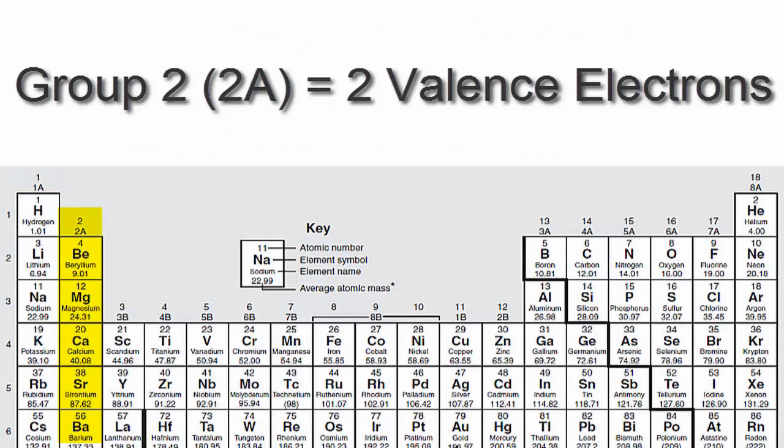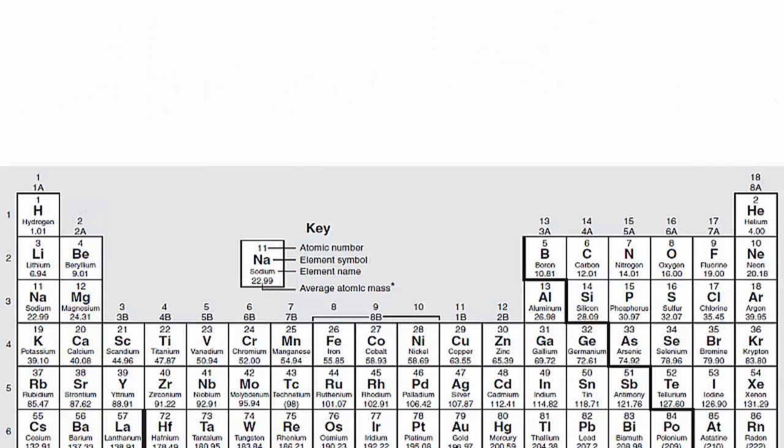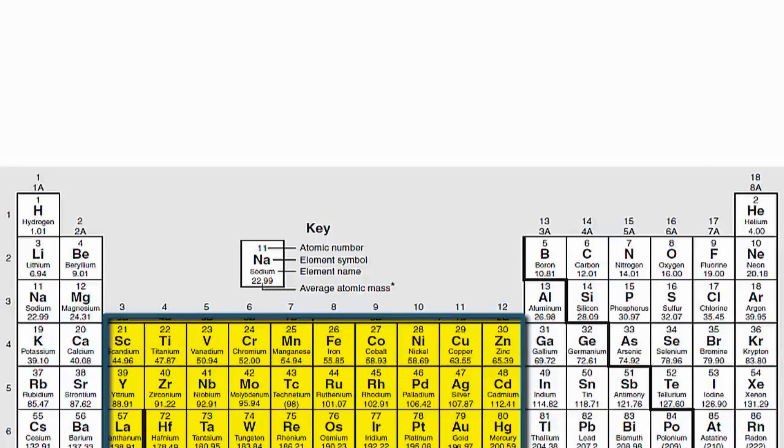If you look at group 2 or 2A, you'll see that those elements have two valence electrons. We'll skip over the transition metals since they're a bit more complicated and probably don't apply to you.